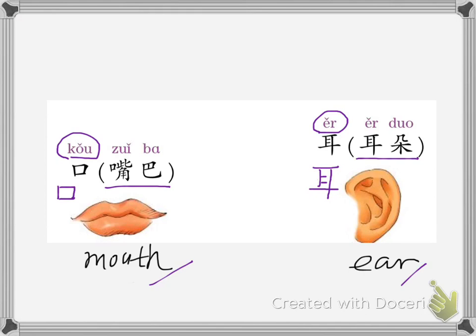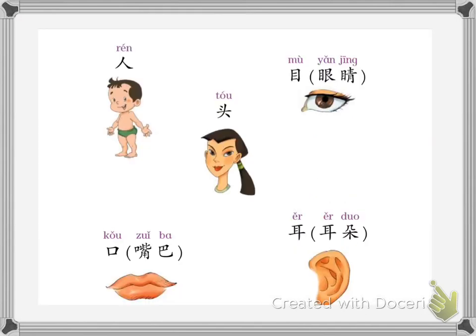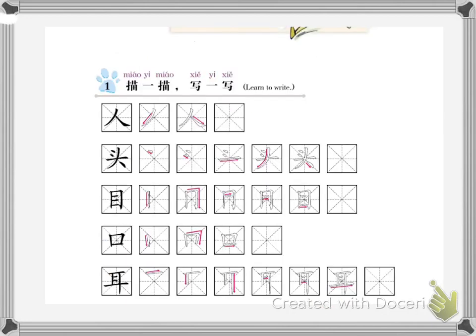Let's review. We just learned: ren, toh, kou, er. This page is to show you the stroke order — please follow the stroke order.